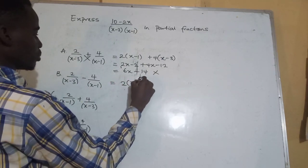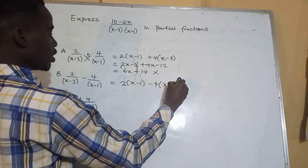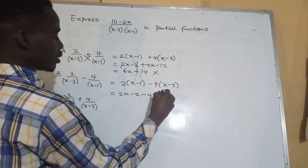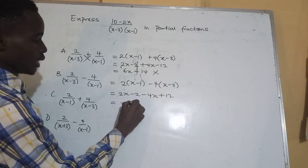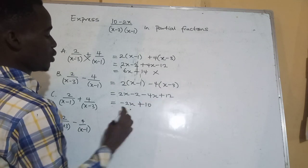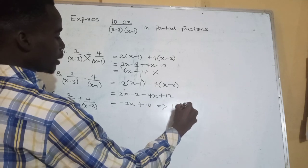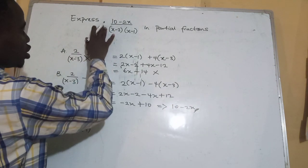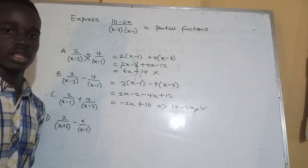So let's go for the next one. We have 2(x minus 1) minus 4(x minus 3). Opening the bracket: 2x minus 2 minus 4x plus 12. So we have 2x minus 4x = minus 2x, and minus 2 plus 12 = plus 10, which gives us 10 minus 2x — the same as our numerator. So option B is our correct answer.